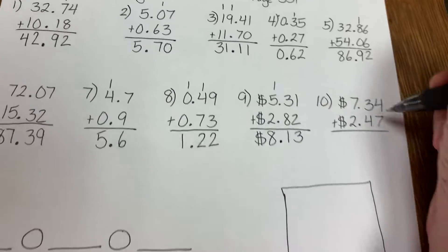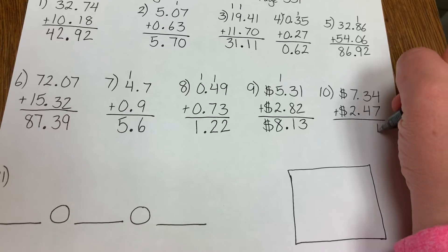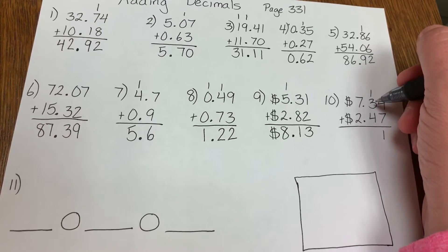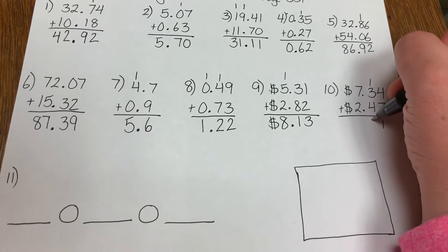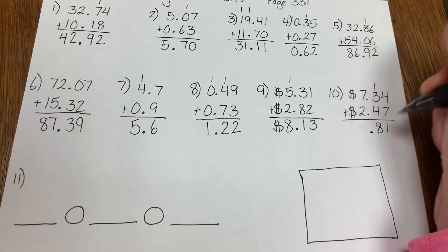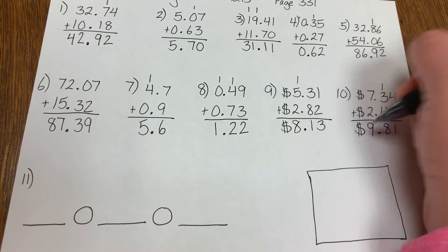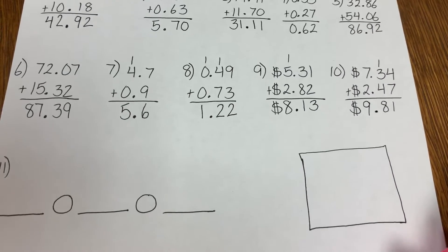Number 10: 4 plus 7 is 11. 1 down, carry the 1. 1 plus 3 is 4, 4 plus 4 is 8. Bring down your decimal. 7 plus 2 is 9. Bring down the dollar sign and your answer is $9.81.